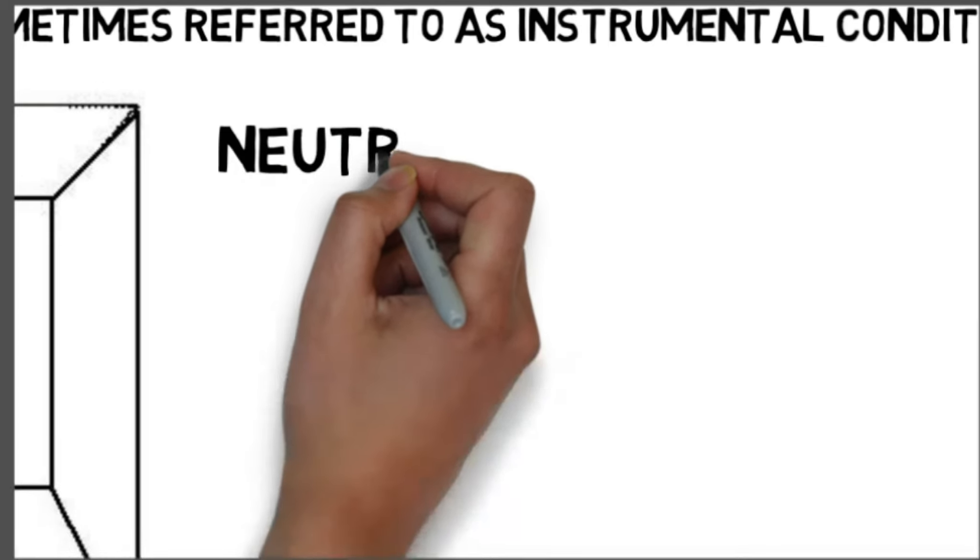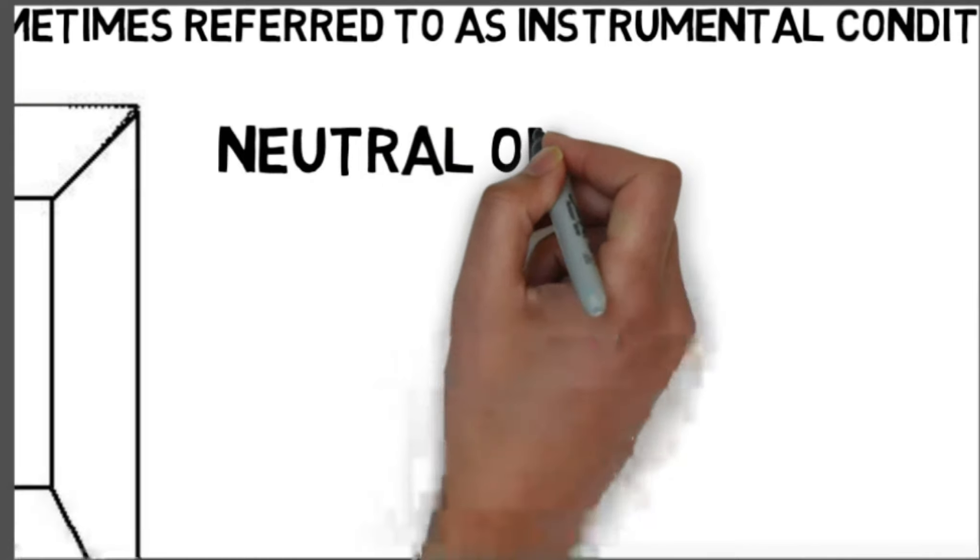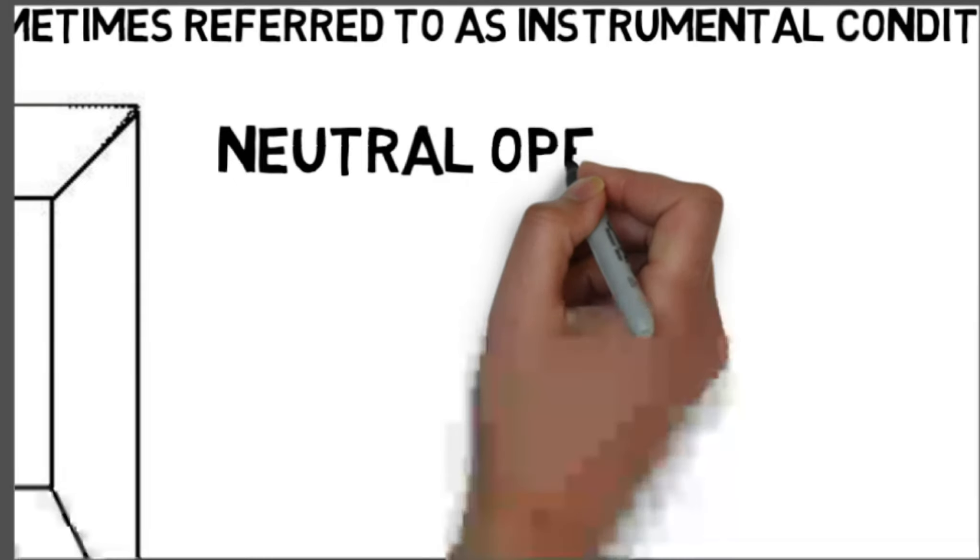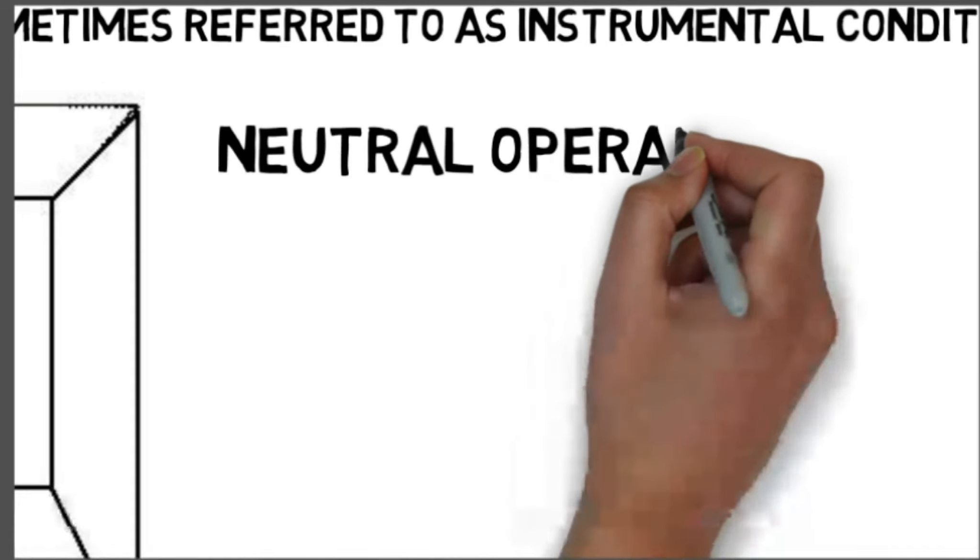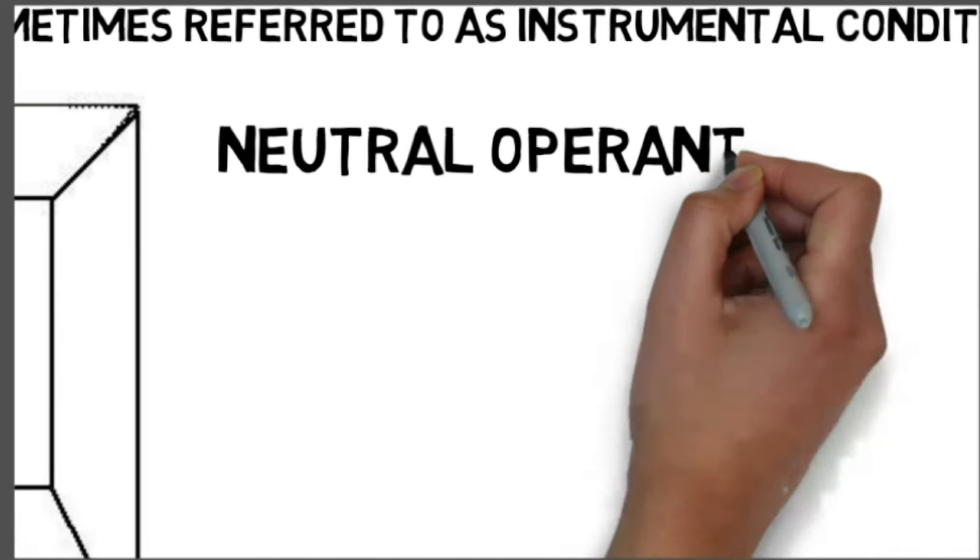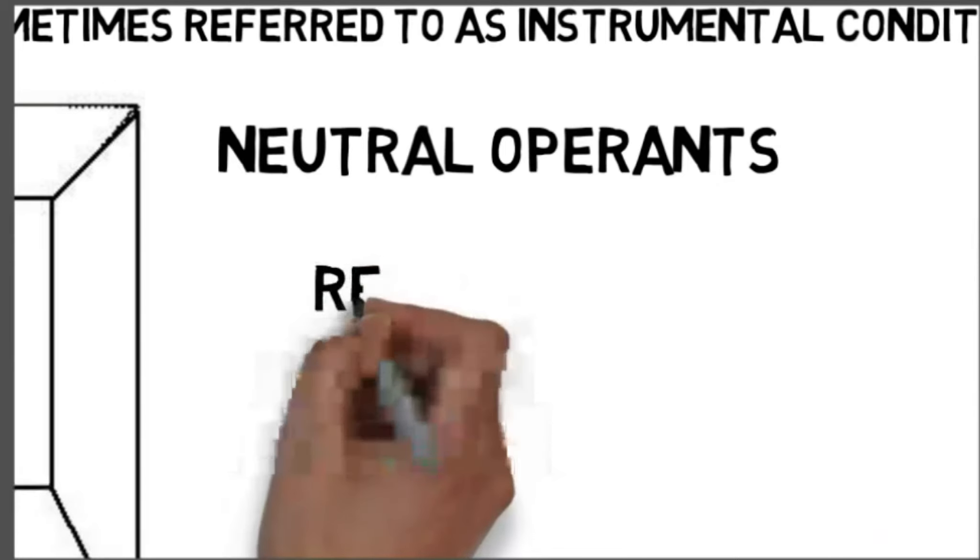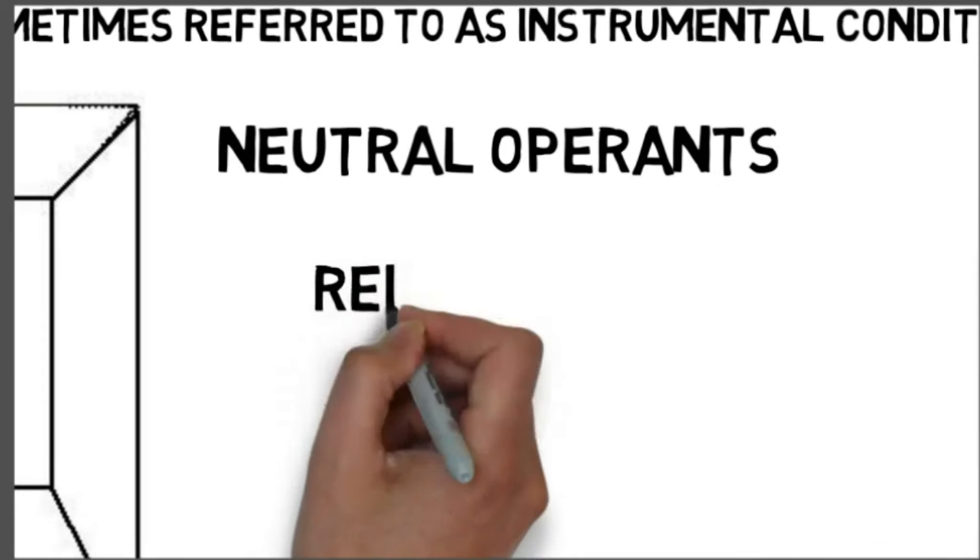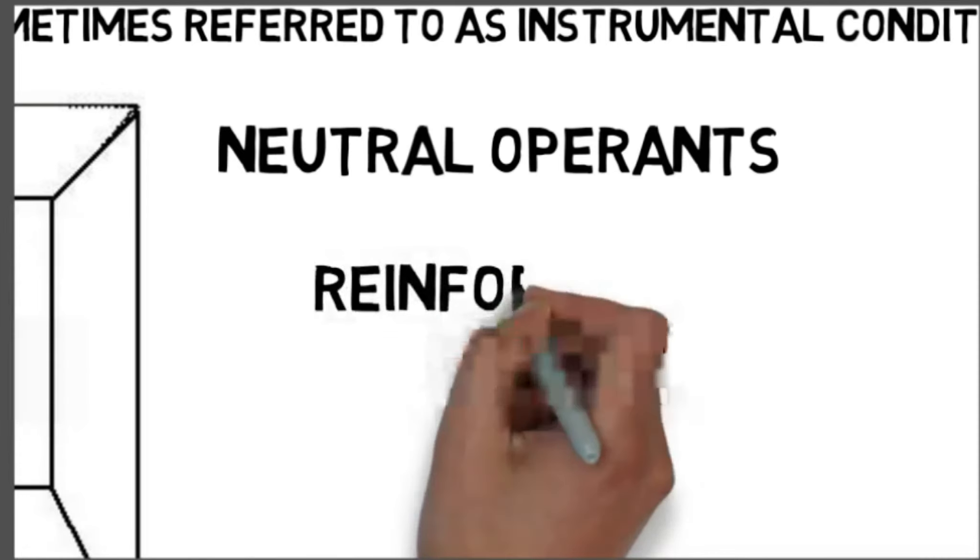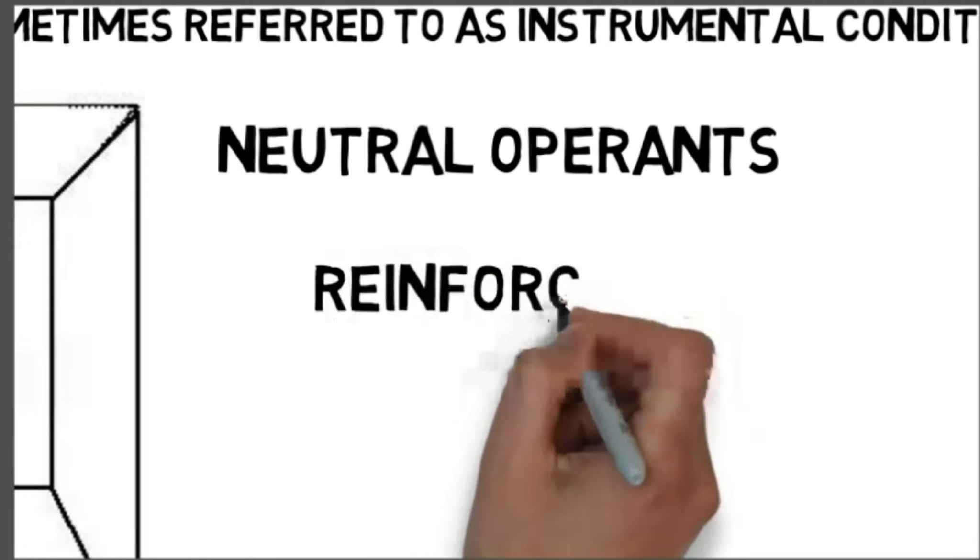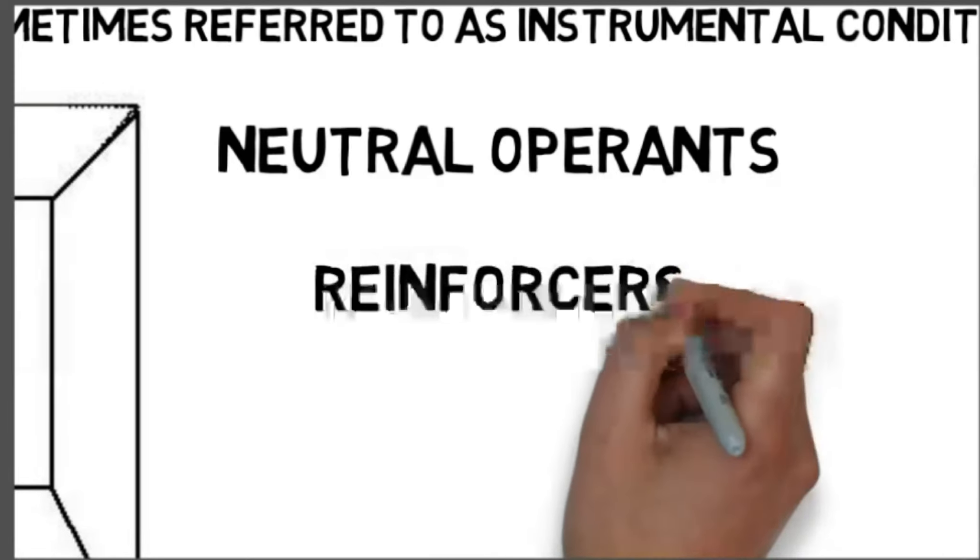Skinner identified three types of responses, or operants, that can follow behavior. There are neutral operants, responses from the environment that neither increase nor decrease the probability of a behavior being repeated. There are reinforcers, any event that strengthens or increases the behavior it follows. There are two main kinds of reinforcers: positive reinforcers are favorable events or outcomes that are presented after the behavior. In situations that reflect positive reinforcement, a response or behavior is strengthened by the addition of something, such as praise or a direct reward.